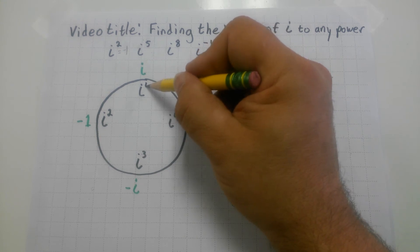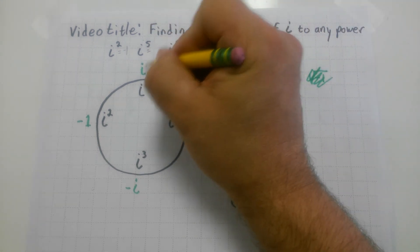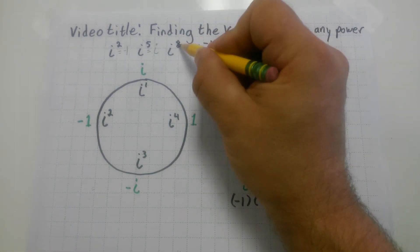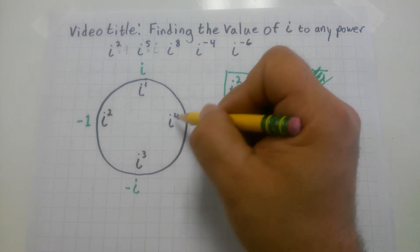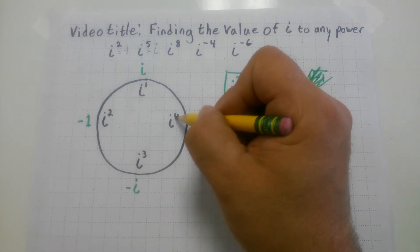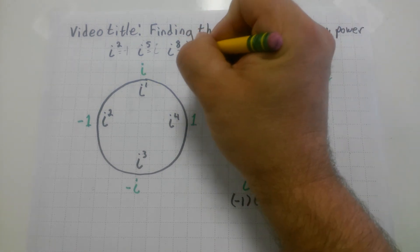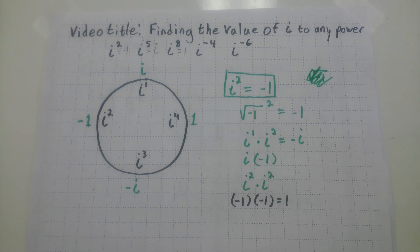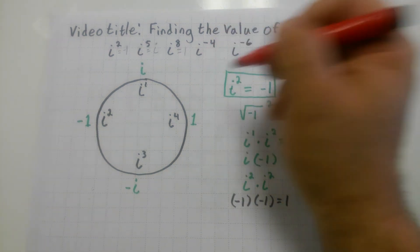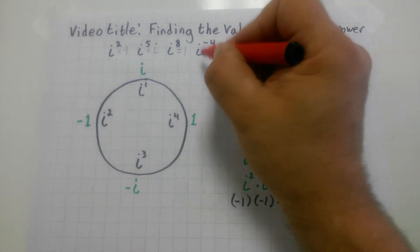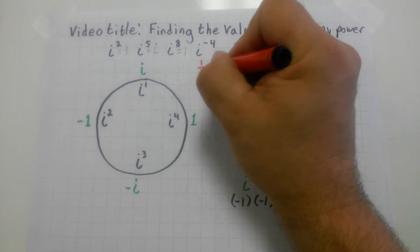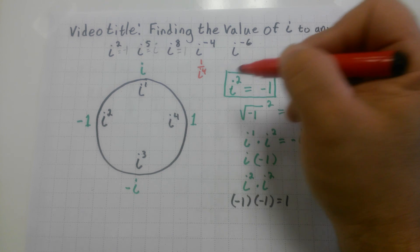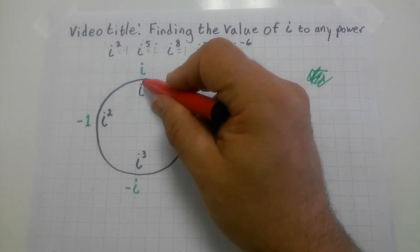If you have that, you can answer any type of question that involves i to any power. i to the second equals negative one. What about i to the fifth? Counting around the circle — first, second, third, fourth, fifth — i to the fifth is equivalent to i. And i to the eighth? First, second, third, fourth, fifth, sixth, seventh, eighth — i to the eighth is equivalent to one.